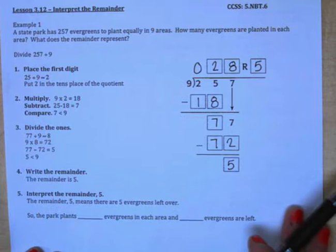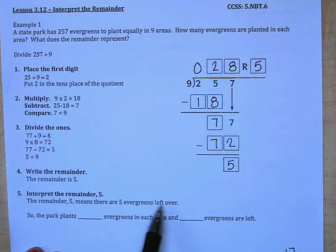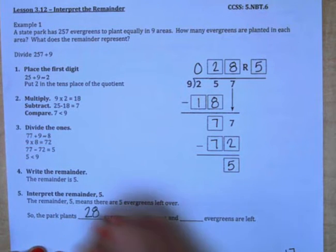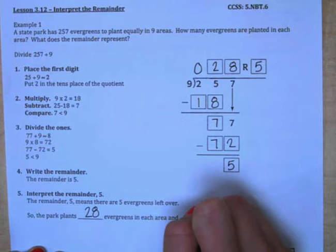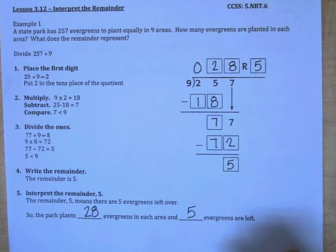Now to interpret the remainder of 5, it means there are 5 evergreens left over. So the park is going to plant 28 evergreens in each of the areas, and then they're going to have 5 left over that are not going to be planted in one of those 9 areas.